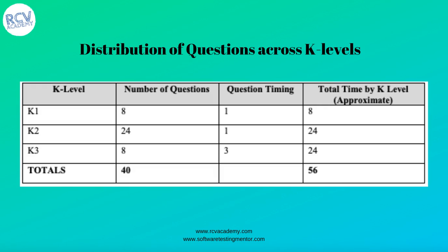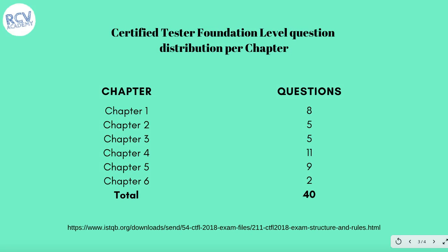This table explains the distribution of questions across the K levels. The K levels relevant for the ISTQB foundation level syllabus are K1, K2, and K3. The distribution among K1, K2, and K3 is 8, 24, and 8 respectively, making a total of 40 questions. The question timing indicates approximately how much time each question should take to answer.